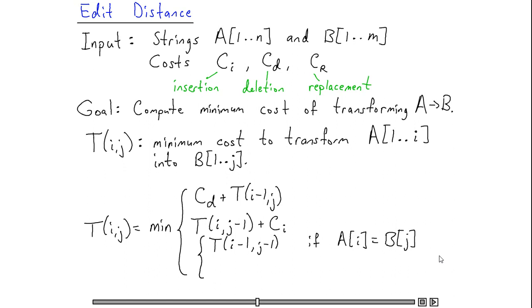If it turns out that the i-th character of A is the same as the j-th character of B, then one alternative is to simply transform the first i-1 characters of A into the first j-1 characters of B, and then the i-th and j-th characters of A and B will already be correct.